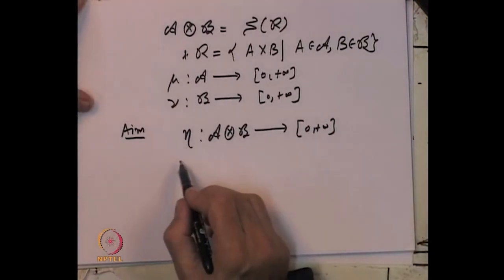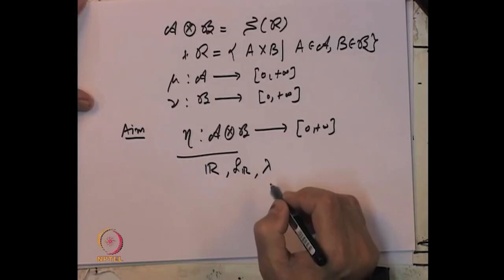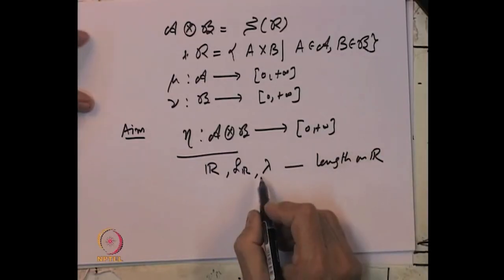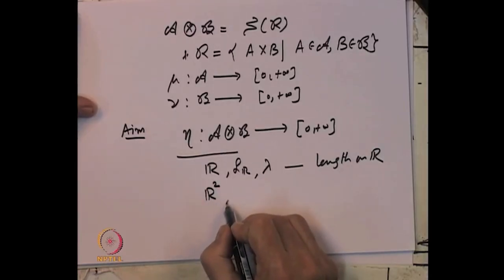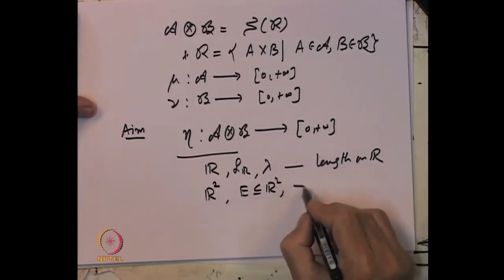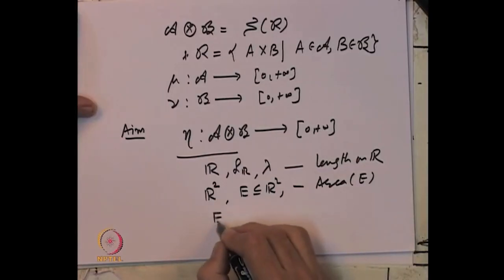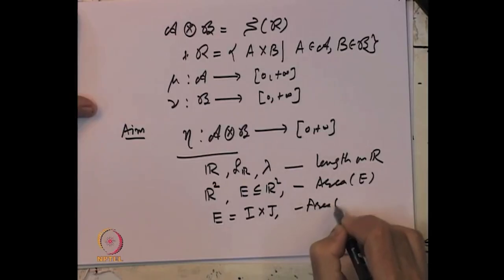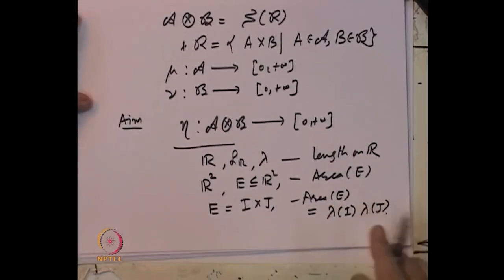Why are such things important? On the real line with Lebesgue measurable sets, we defined the notion of Lebesgue measure, which extended the notion of length for subsets of ℝ that are not necessarily intervals. We want to do the corresponding thing on ℝ². Given a set E in ℝ², we would like to define its area. If E looks like a rectangle I×J, we know the area is length(I) × length(J). This motivates the notion of the product.